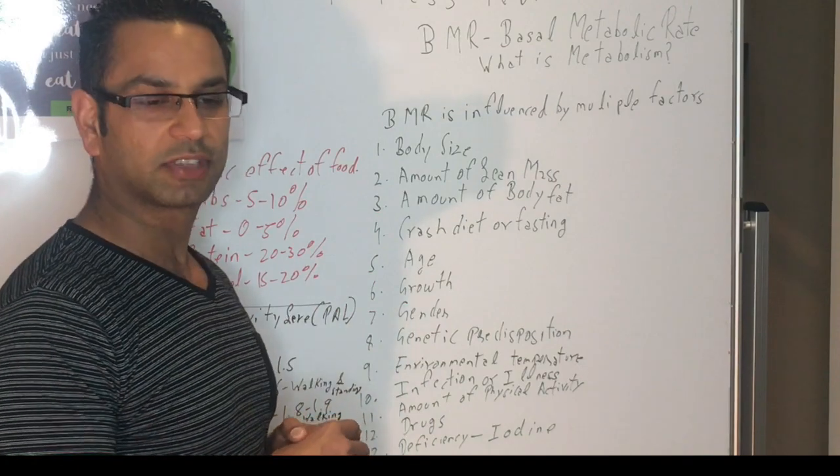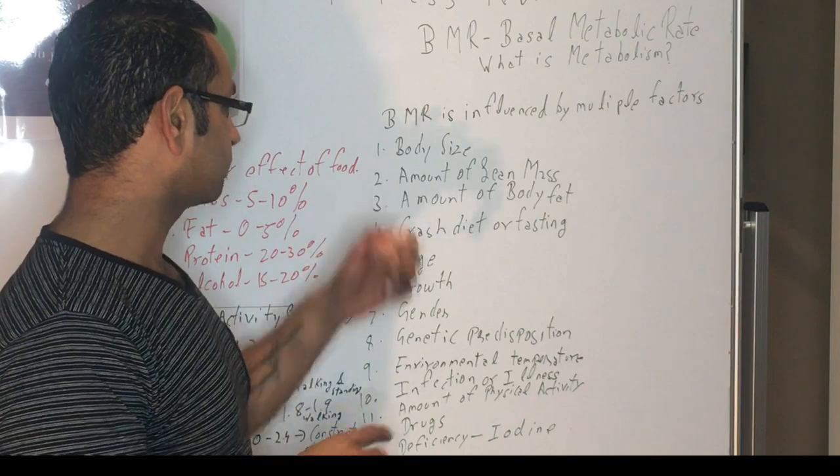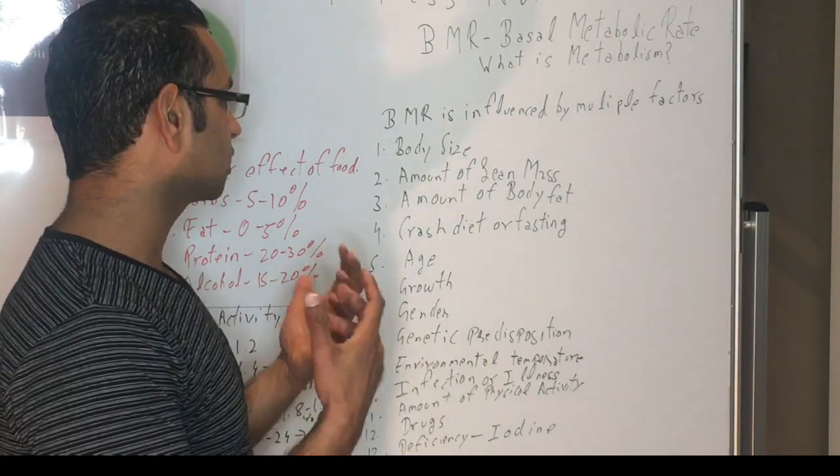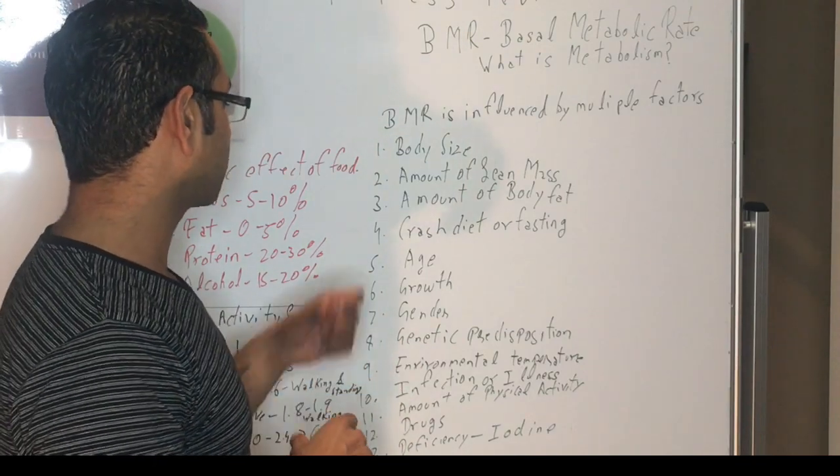And then the second one is amount of lean muscle mass. For the same reason, the muscle mass—if you've got more muscle mass, the muscles are more active and then you would have higher BMR as well.